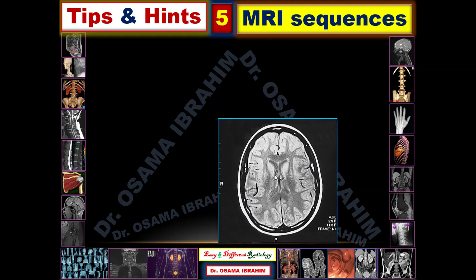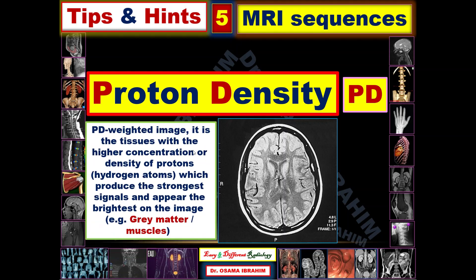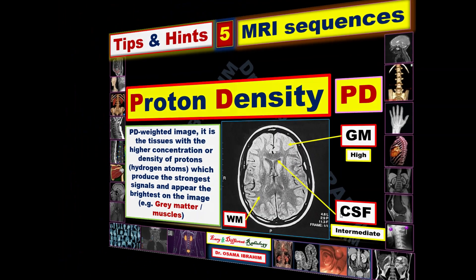This sequence shows CSF appearing as intermediate signal. The gray matter appears brighter than other tissues because gray matter has a high concentration of protons. This sequence is therefore dependent on the proton concentration level, so it is called the proton density sequence. Proton density imaging depends on the high concentration and density of protons within the tissue. Gray matter and muscle have high concentrations, so they appear brighter, as shown by the arrow pointing to the cortex with high signal compared with the lower signal of white matter and intermediate signal of the ventricles.